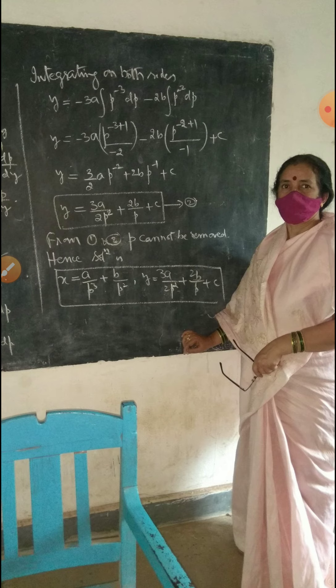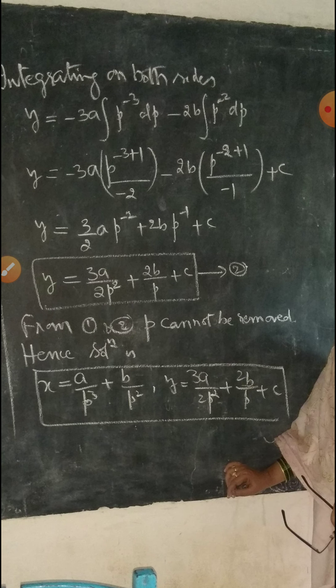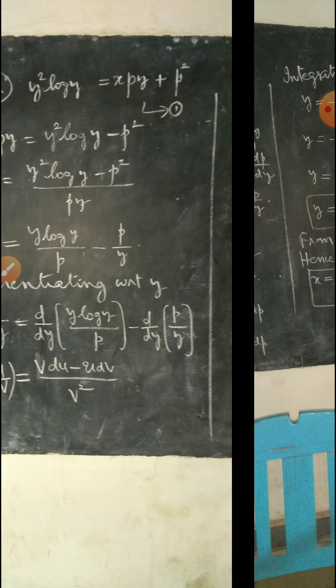So Y = -3A·(P⁻²/(-2)) - 2B·(P⁻¹/(-1)) + C, which gives Y = (3A)/(2P²) + 2B/P + C. Since P cannot be eliminated from equations 1 and 2, the solution is given parametrically: X = A/P³ + B/P², and Y = 3A/(2P²) + 2B/P + C. I hope this is clear.